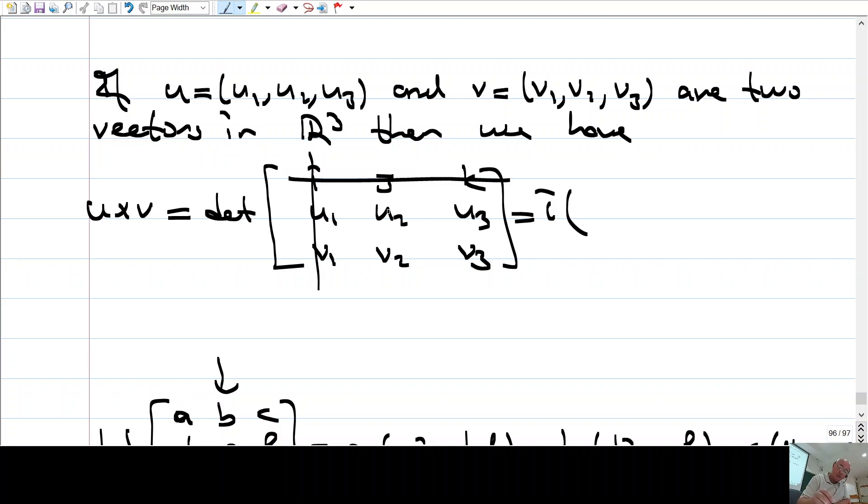So, this is I times what? You cross this one and this one. Determinant of the remaining matrix. So, U2, U2, V3, minus U3, V2. And then, you change the sign because this was 1, 1. This is 1, 2. Minus 1 to the power of 1, 2 is just minus 1.